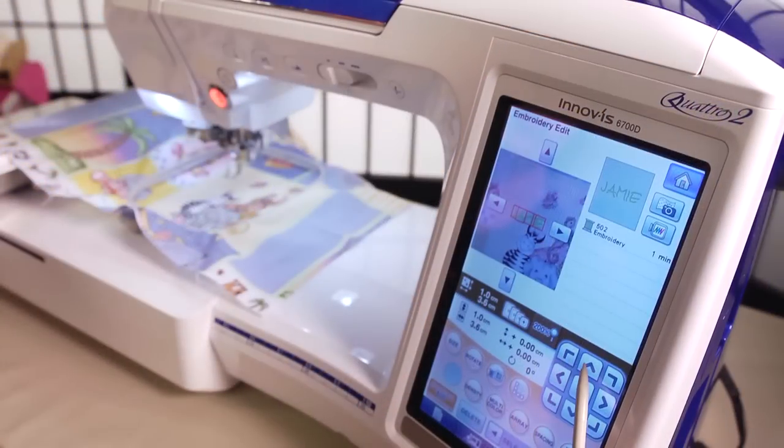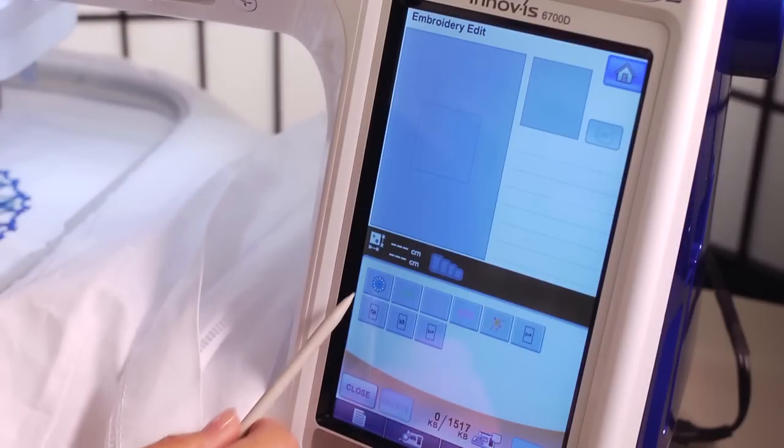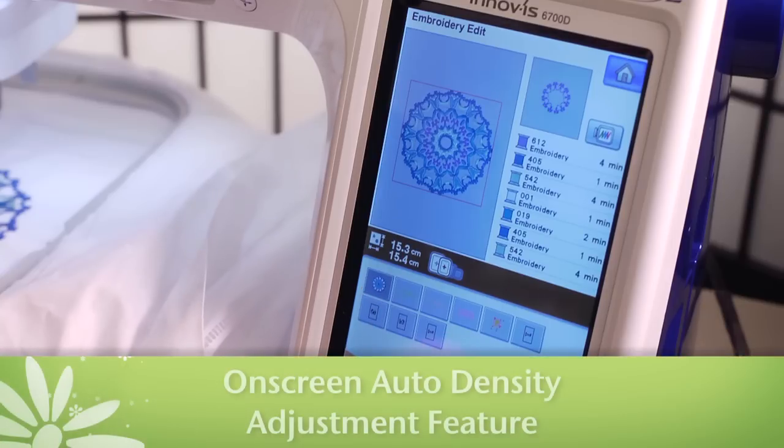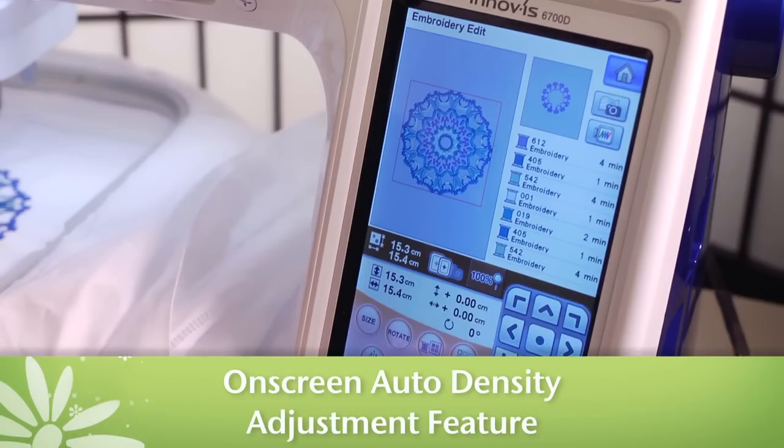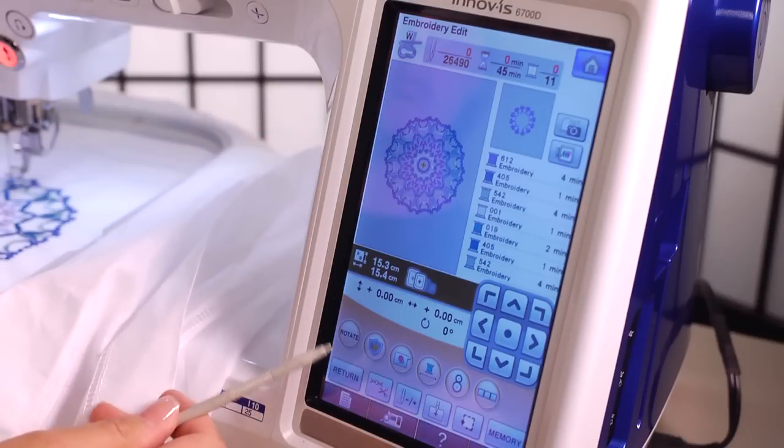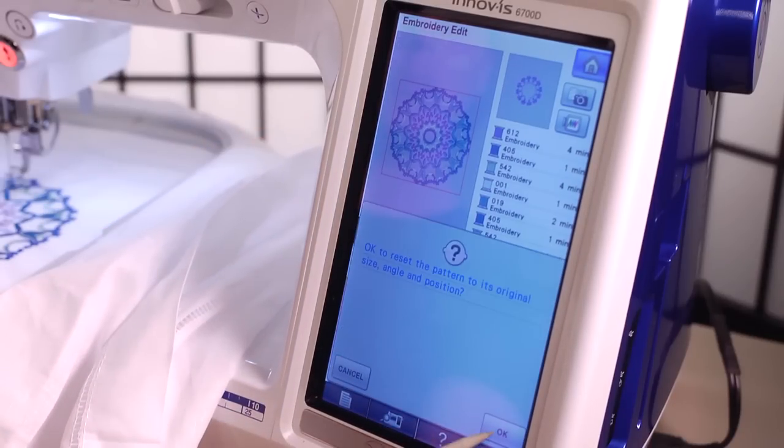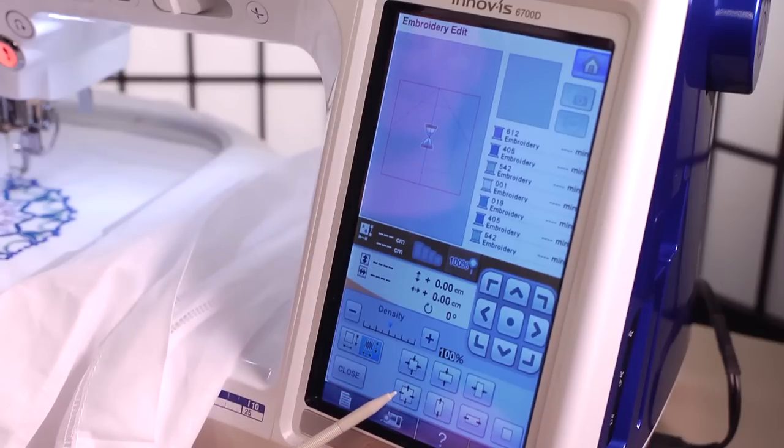This is a must-have when placing designs on pre-made garments or on collars. Also a must-have for the discerning embroiderer is the enhanced on-screen auto-density adjustment feature, also known as stitch-to-block, which automatically recalculates your stitch count when you enlarge designs up to 200% or reduce them down to 60% of the original size.